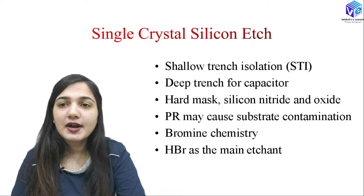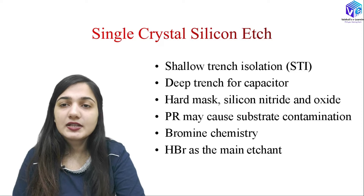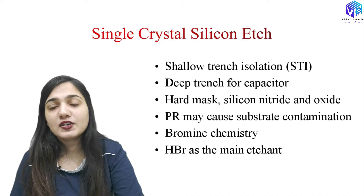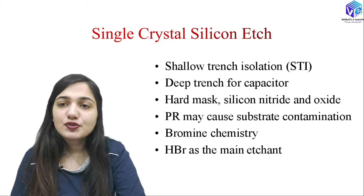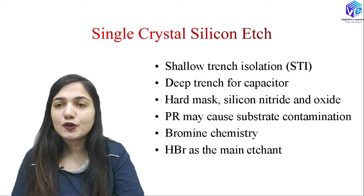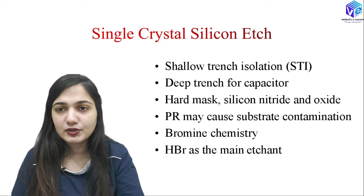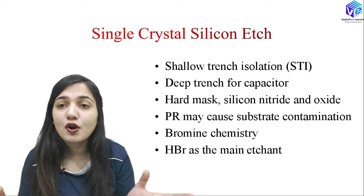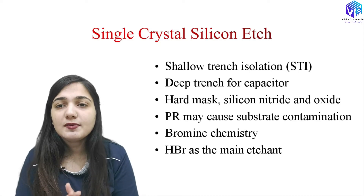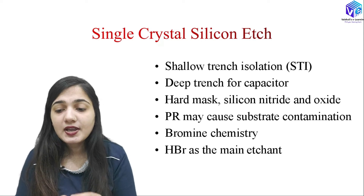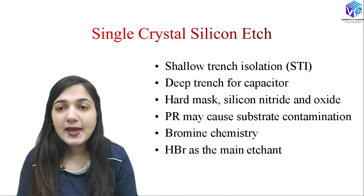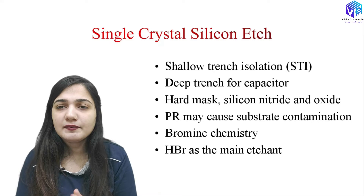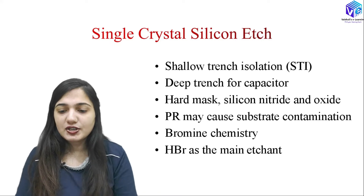First of all we are going to start with the single crystal silicon etching. What is single crystal silicon etching? We are etching out the single crystal silicon wafer to make the shallow trench isolation. We make this isolation so that two transistors or two MOSFETs are not shorted out to each other. I will be discussing both the shallow trench isolation and the deep trench capacitor — their structures and functioning.